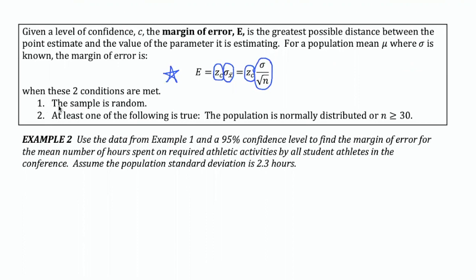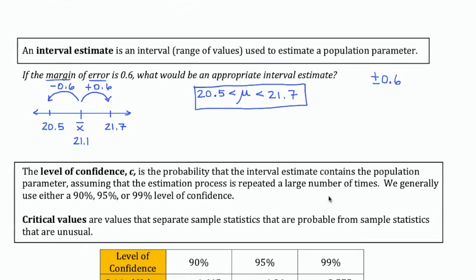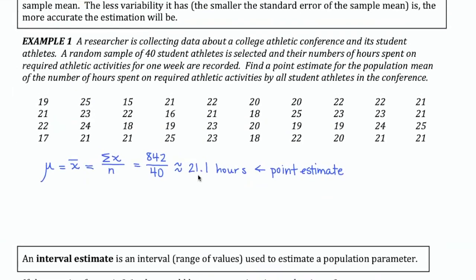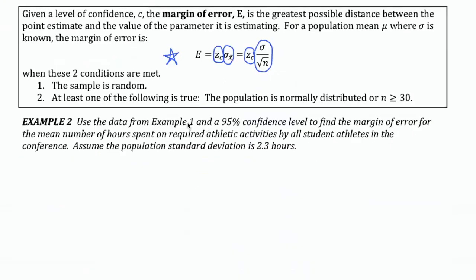Either your population is normally distributed or your sample size is bigger than or equal to 30. So let's try calculating the margin of error for our point estimate. We're asked to take the data from example one and we want a 95% confidence level. We're also given an additional piece of information which we need — the population standard deviation, reported to be 2.3.